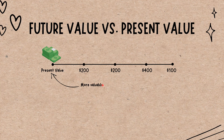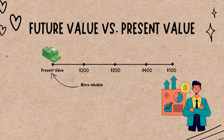Future value is the value of a current asset at a specified date in the future based on an assumed rate of growth. The FV equation assumes a constant rate of growth and a single upfront payment left untouched for the duration of the investment. The FV calculation allows investors to predict, with varying degrees of accuracy, the amount of profit that can be generated by different investments.